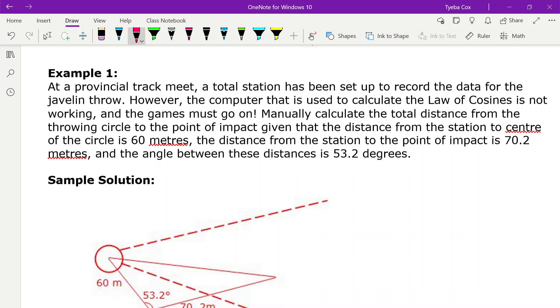Manually calculate the total distance from the throwing circle to the point of impact given that the distance from the station to the center of the circle is 60 meters.